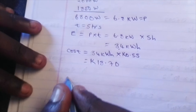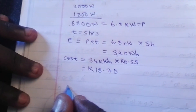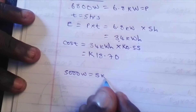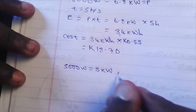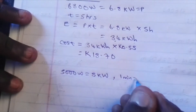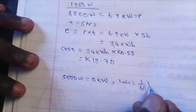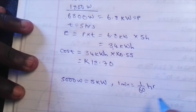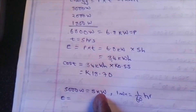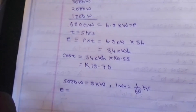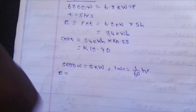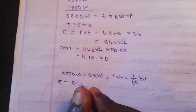Option A gives us 5,000 watts, which is equal to 5 kilowatts. The time is 1 minute, which is equal to 1/60 of an hour. The energy will be equal to 5 kilowatts times 1/60, which gives us approximately 0.083 kilowatt hours.